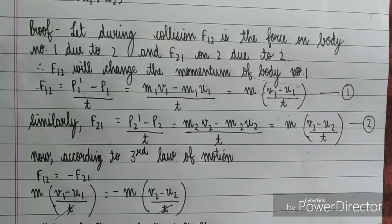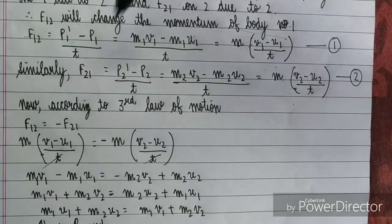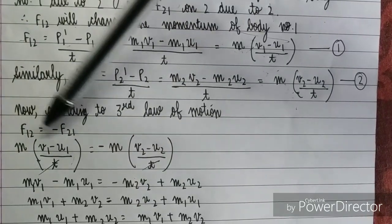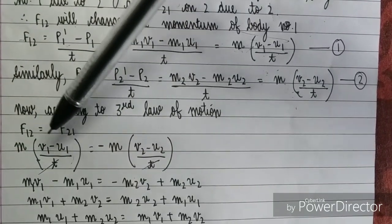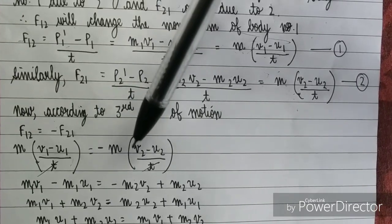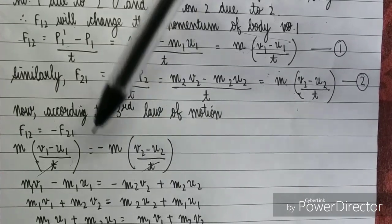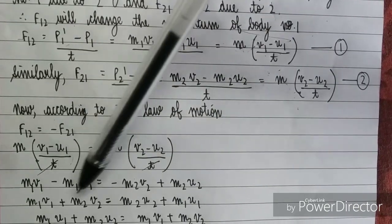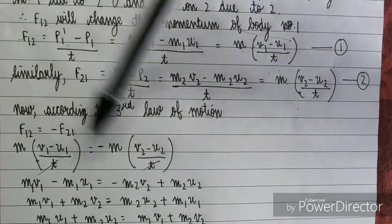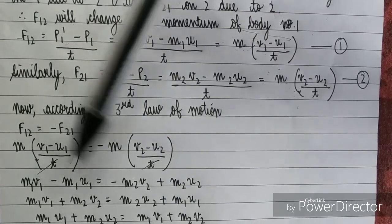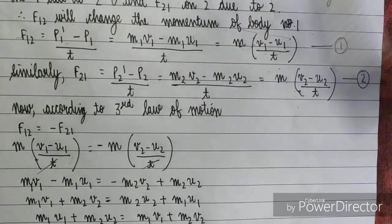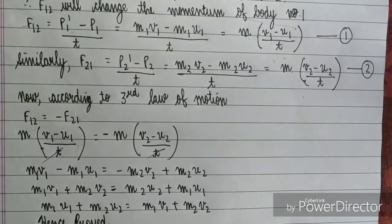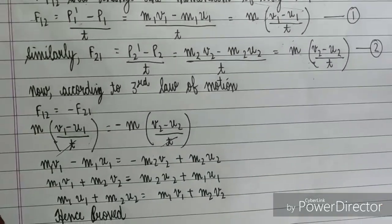After this, we have only simplified them. T will cancel from T to T. M1 V1 minus M1 U1 is equal to minus M2 V2 plus minus minus positive, so positive M2 U2. After this, we have just simplified it. We have taken the final velocity side, and we have taken the initial velocity side. So we have just to prove that momentum before is equal to momentum after. So last, we have written hence proved.